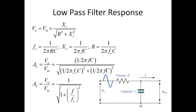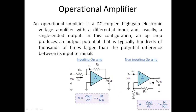Now to convert the passive low-pass filter into an active low-pass filter, we attach an amplification stage using a device called an operational amplifier (op-amp). An op-amp is a high-gain electronic voltage amplifier with a differential input — it needs two inputs and produces a single output that is typically hundreds of thousands of times larger than the potential difference between the input terminals.